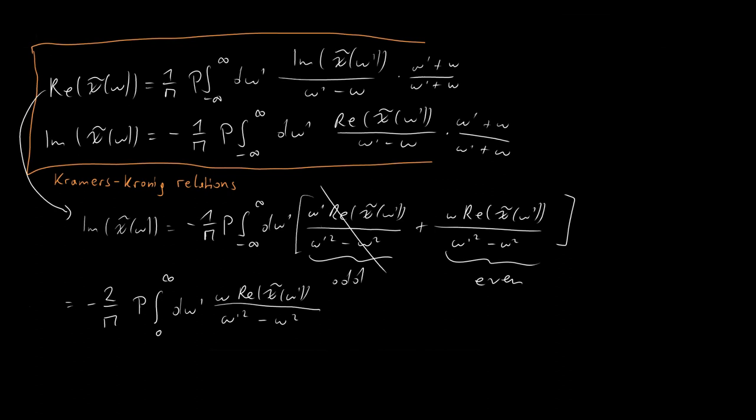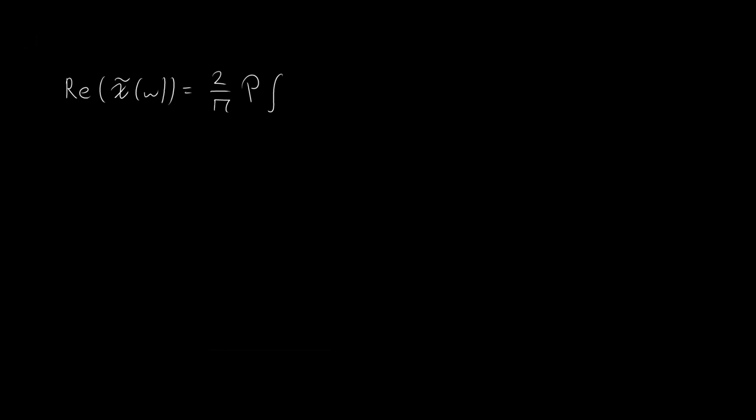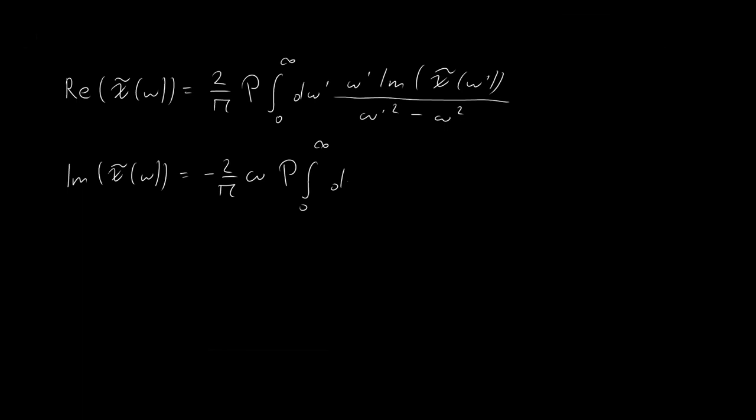Let me clean this up and write out the expressions we derived. There you have it — the Kramers-Kronig relations in full, expressed only as integrations over positive frequencies. If we know the imaginary part of chi tilde, we can get the real part by carrying out this integration, and vice versa. So measuring either is enough to get information about the whole susceptibility or linear response function, which is really helpful. This is why physicists like these relations so much.